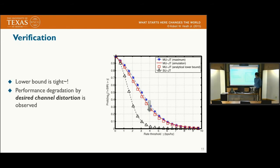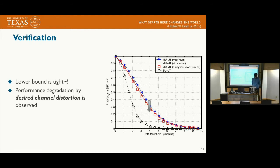Here we provide some verification. Comparing the derived analytical expression with simulation results, we see that our analysis result is tightly matched with simulation. In addition, we observe that the distributed zero-forcing beamforming actually degrades performance compared to the ideal case, because the desired channel gain is distorted by distributed zero-forcing.